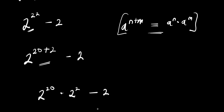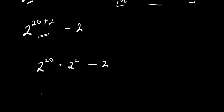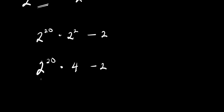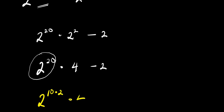From here we can have 2 to the power of 20 times 2 to the power of 2, which is 4, then we have minus 2. So we need to find the value of 2 to the power of 20. For us to do that, we can express that as 2 to the power of 10 times 2, multiplied by 4, minus 2.